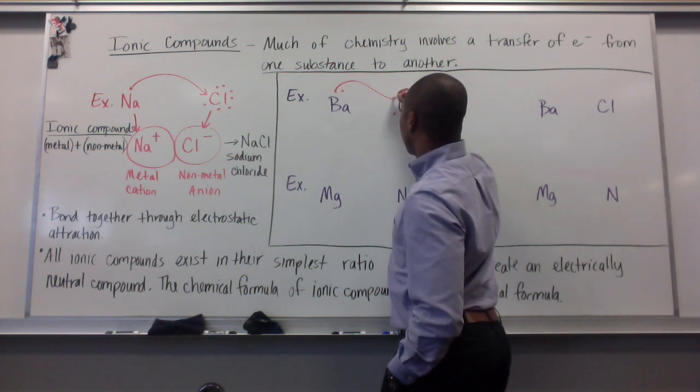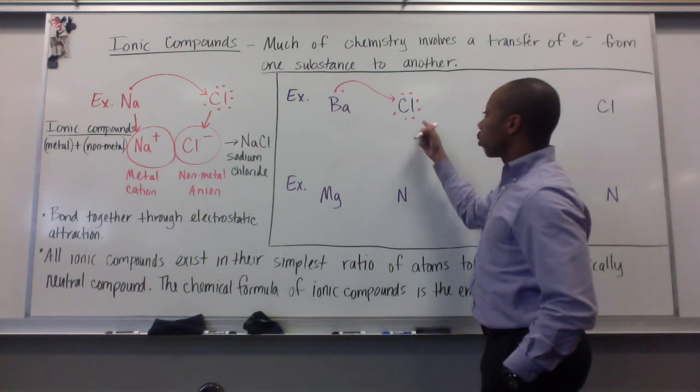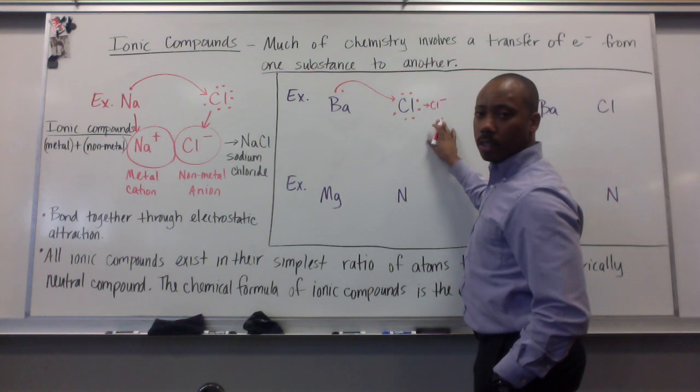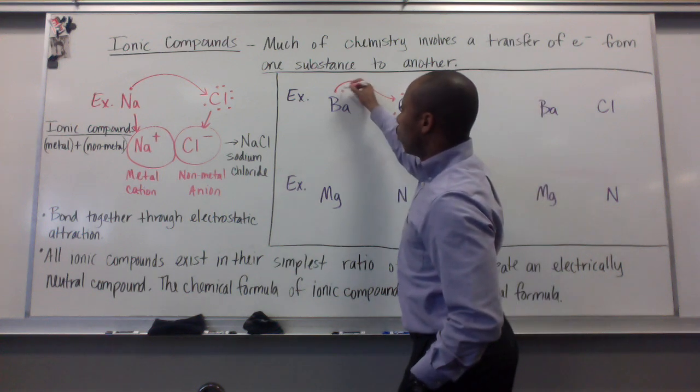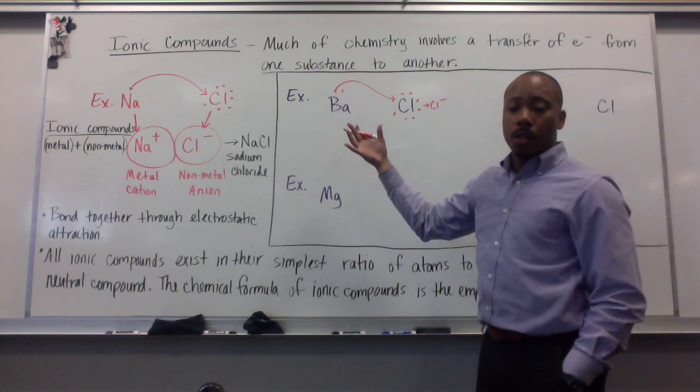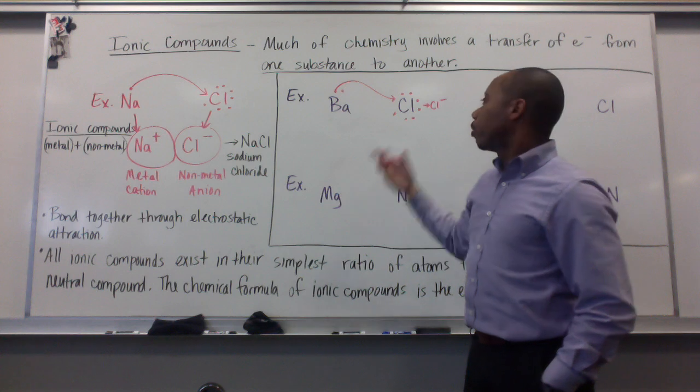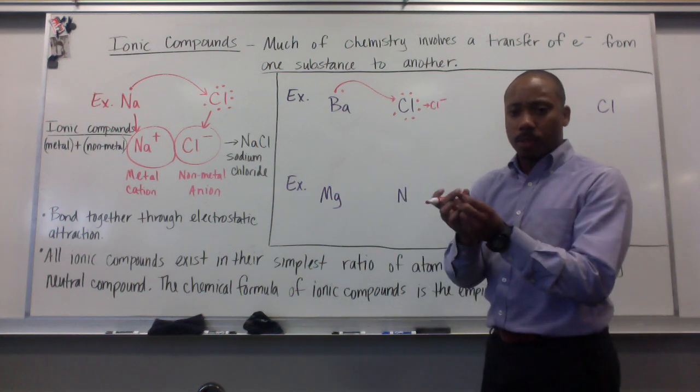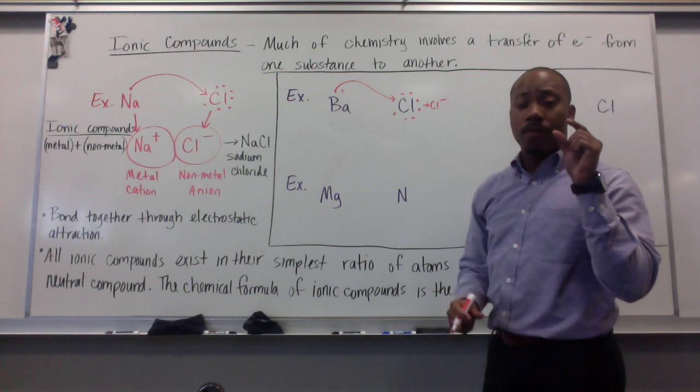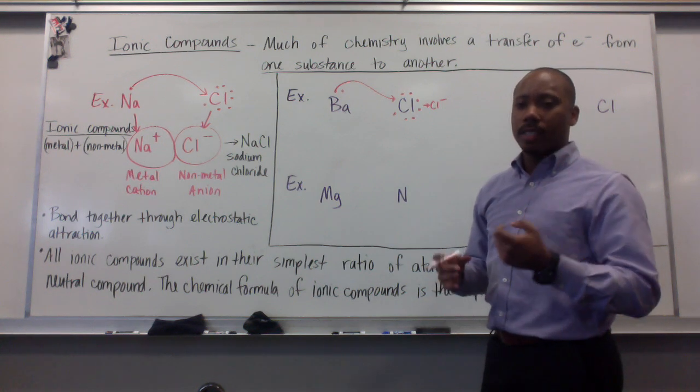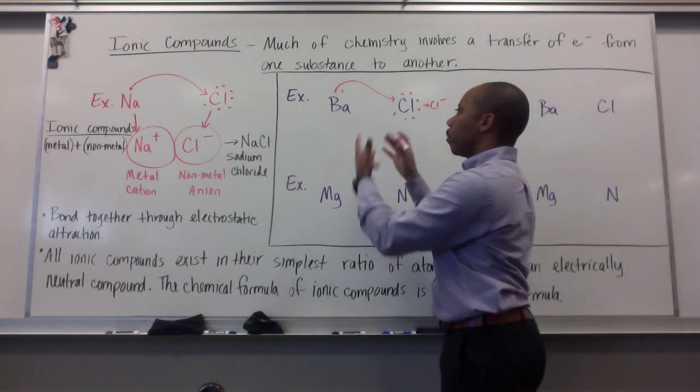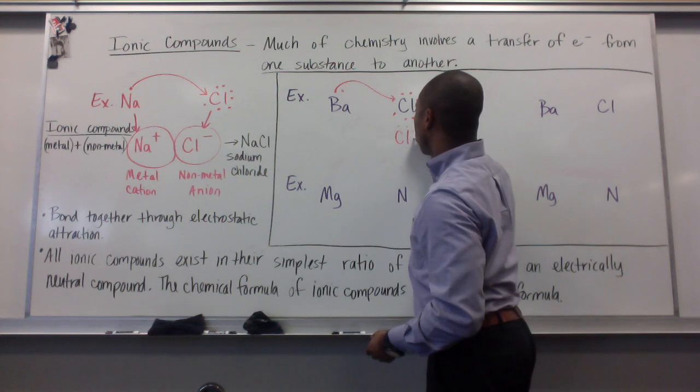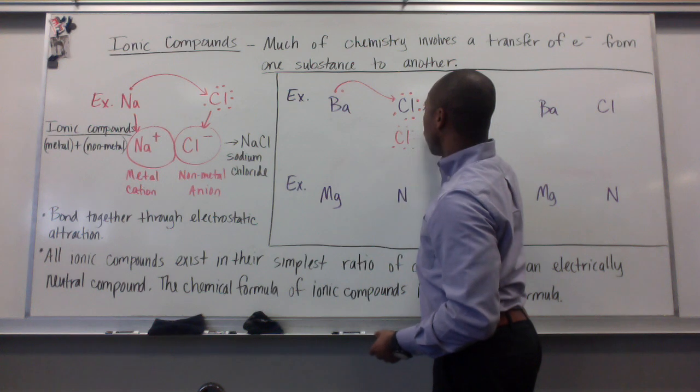Barium will give one to this chlorine. This chlorine becomes Cl-. But he has one left over. Where you have one barium, you have a million bariums. Where you have one chlorine, you have a million chlorines. In a sample size, you can have a million atoms there. So, you never just have one chlorine, one barium.